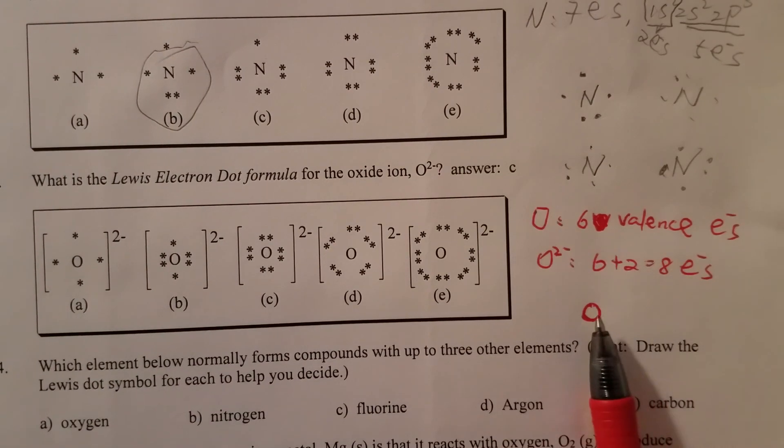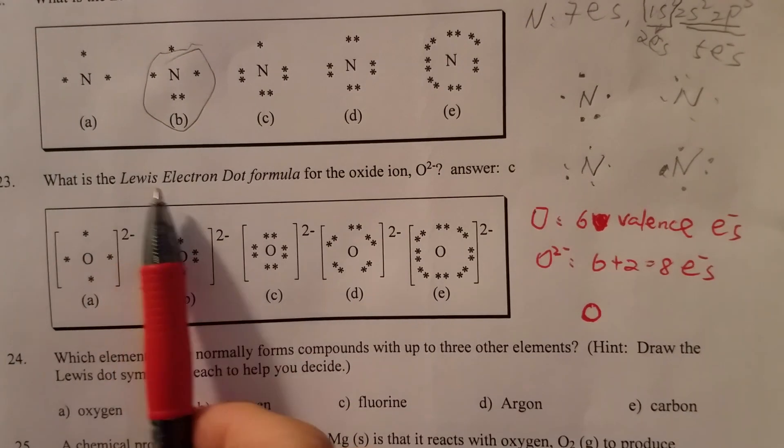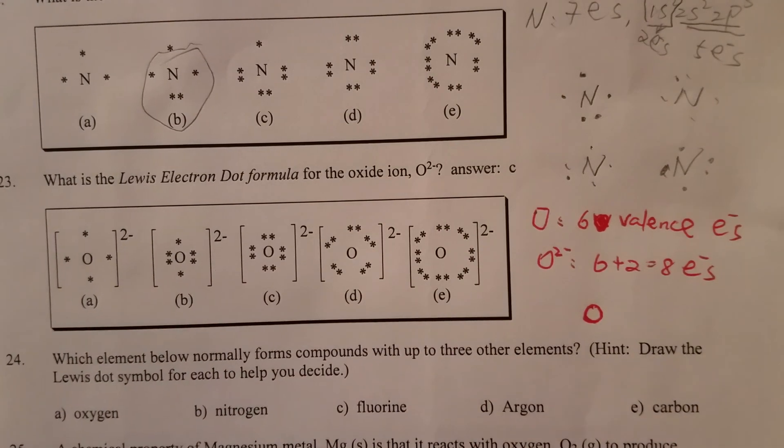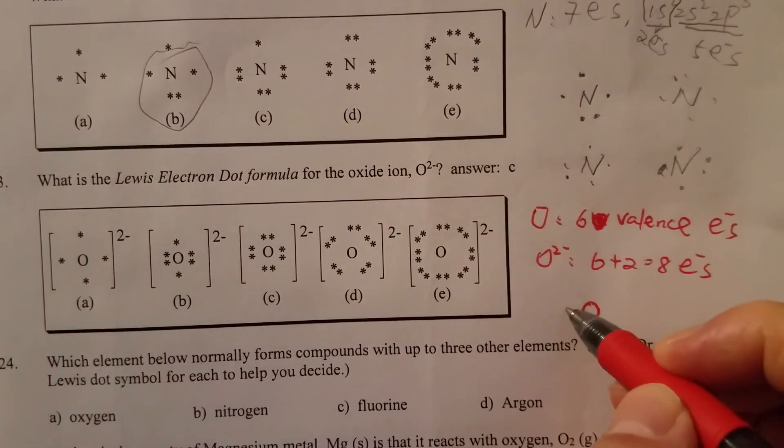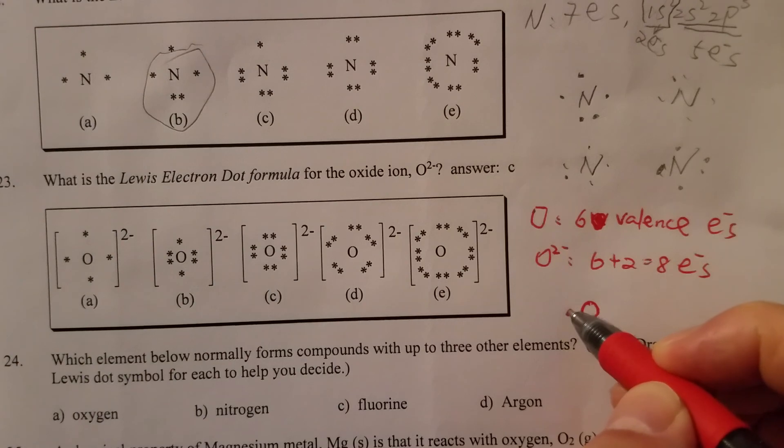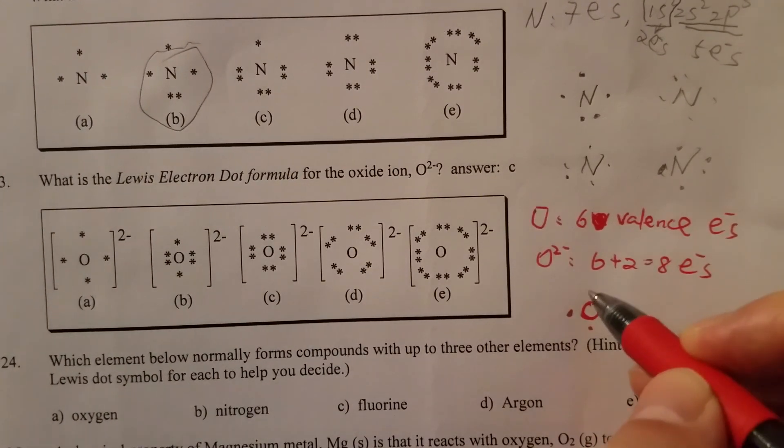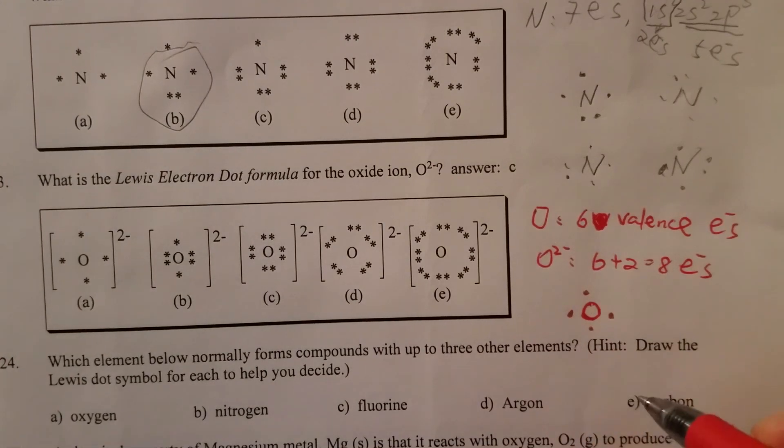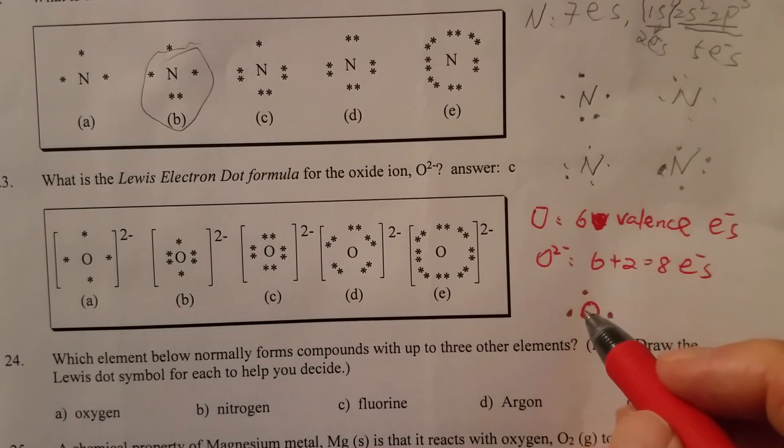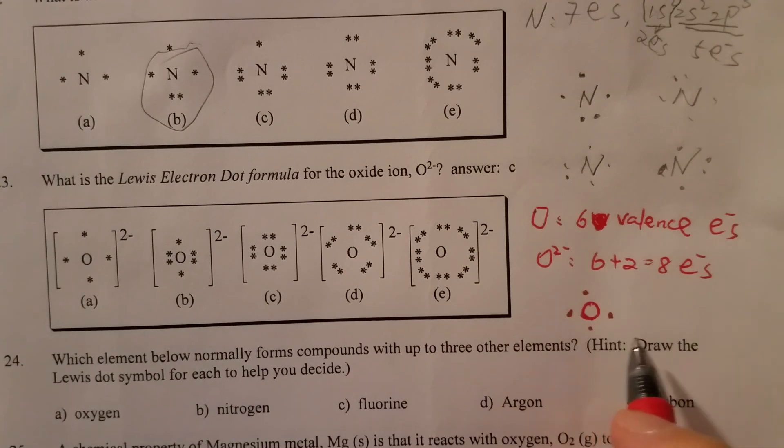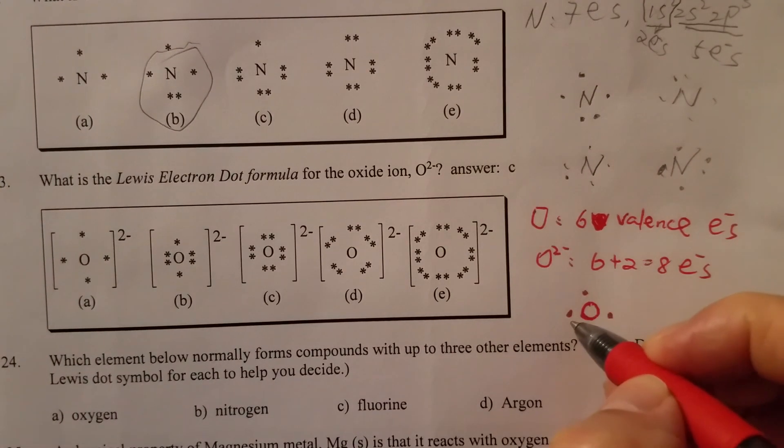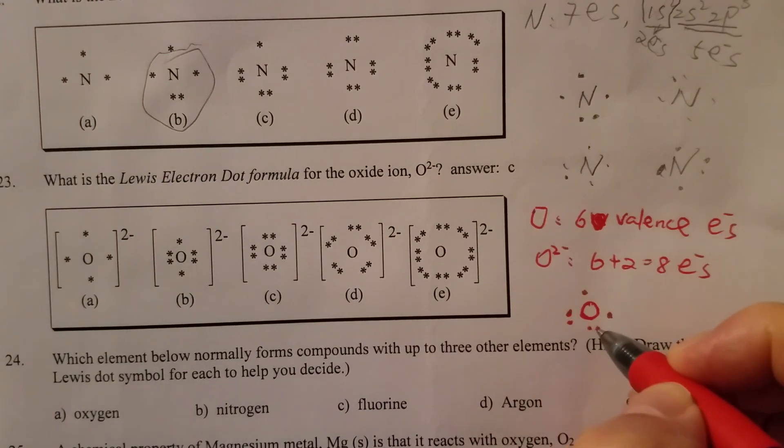Now in order to draw the Lewis electron dot formula, again we will put one electron on each side first. So 4 electrons have been assigned so far, then 8 minus 4, there are 4 more, so just pair each side.